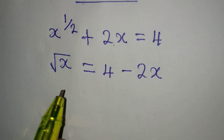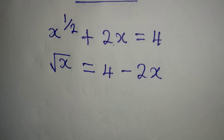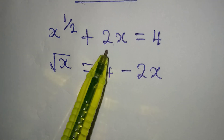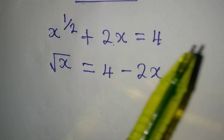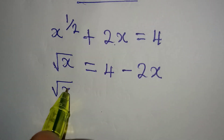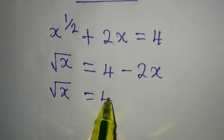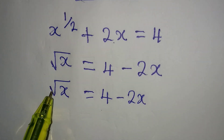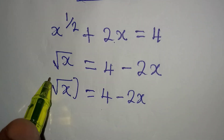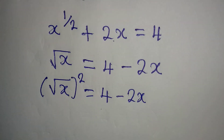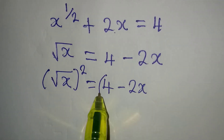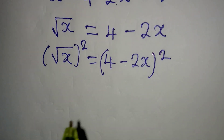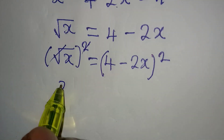Every time you move a number, you're making it the subject of the formula. After bringing the equal sign, you pick from the right before coming back to pick from the left. So now we have square root of x equal to 4 minus 2x, but we need to remove the square root, so we will square both sides.